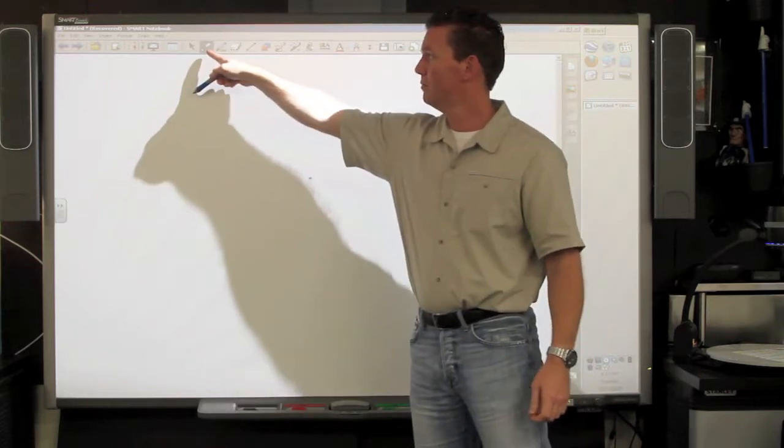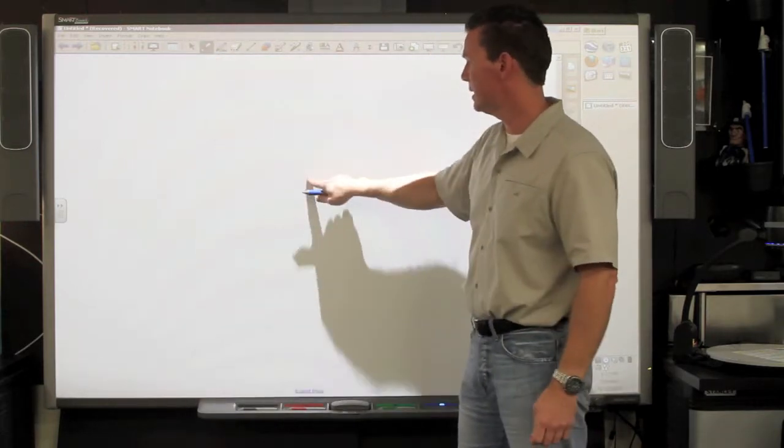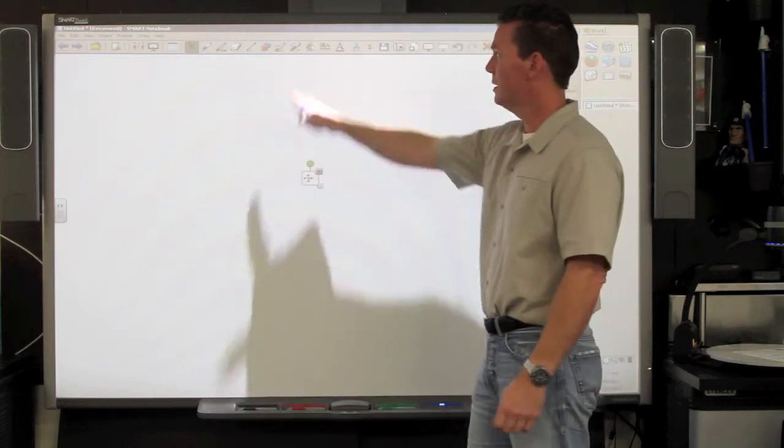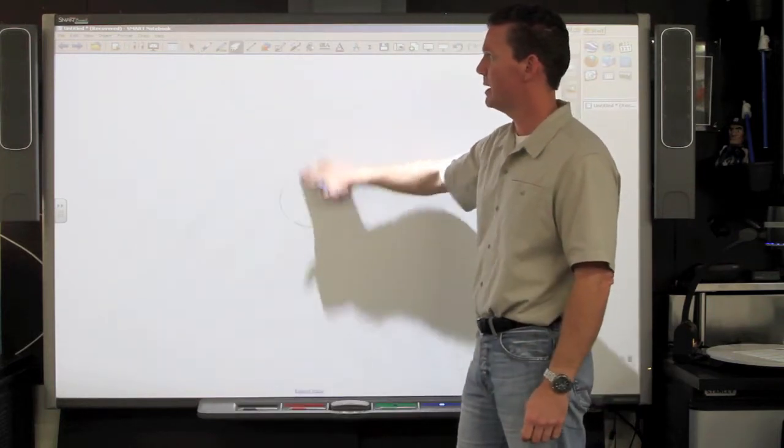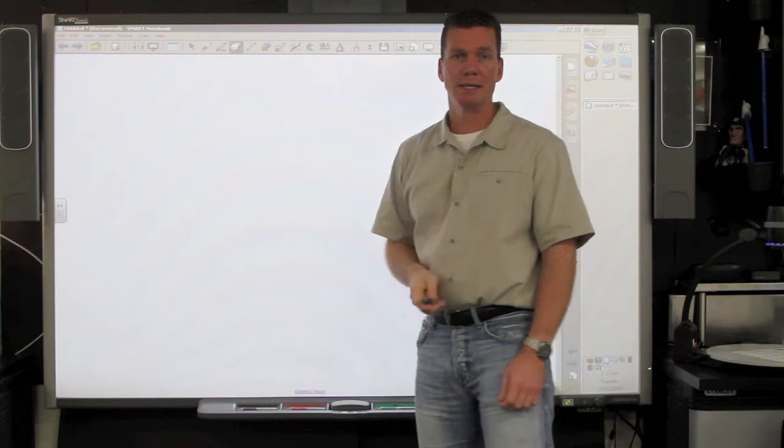So a pen, it switches it to pen. I want to select it, it switches it to selection tool with my finger. If I want to erase it, I slap my hand on there and sure enough, the button has changed for me.